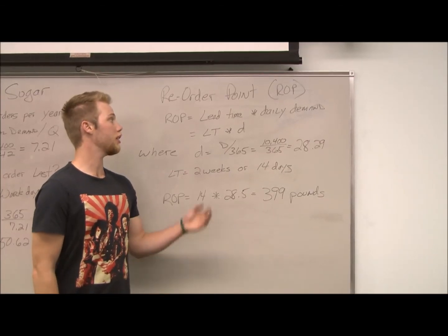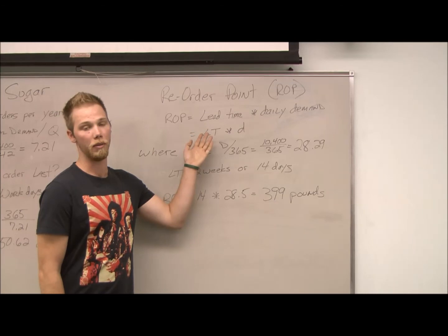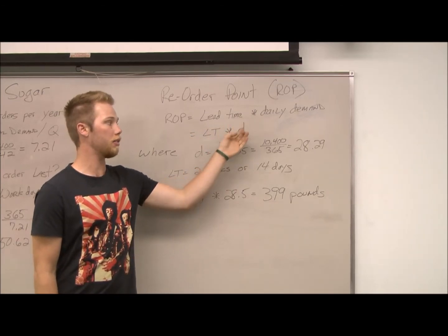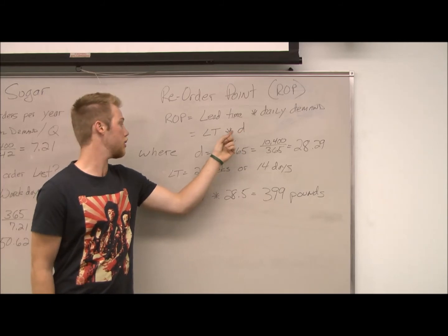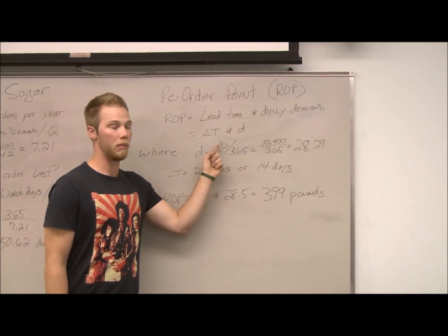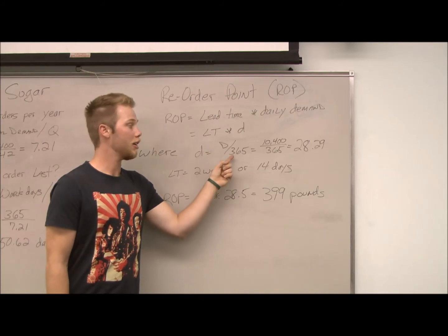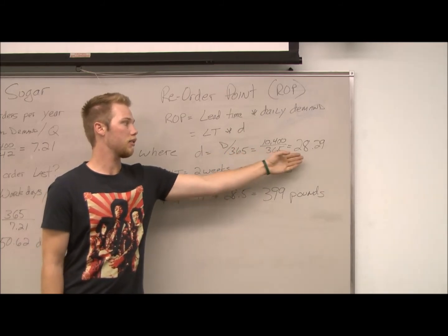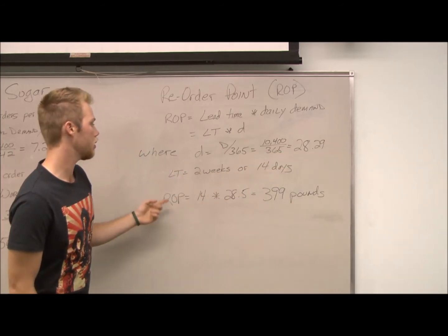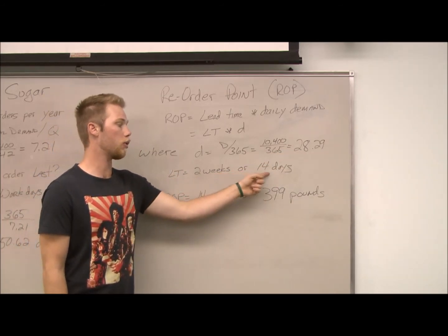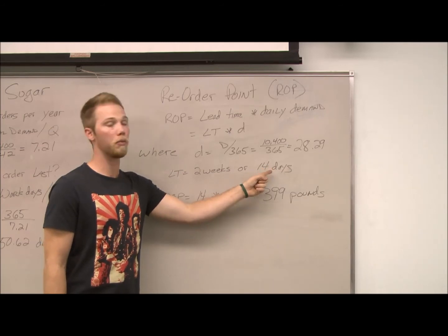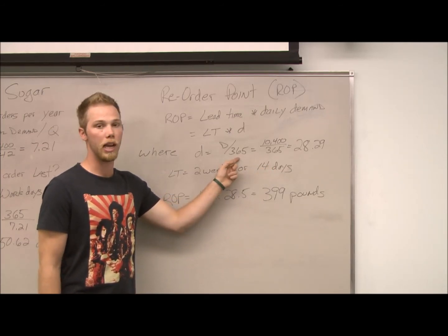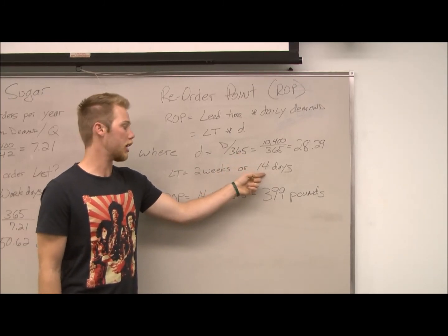The reorder point equals lead time — the amount of time it takes to ship products — multiplied by daily demand, indicated by small d. Small d equals annual demand, or big D, divided by 365. That gives us 28.29 pounds per day. Lead time is given as 2 weeks or 14 days, and it's important to express it as 14 days to keep units consistent.